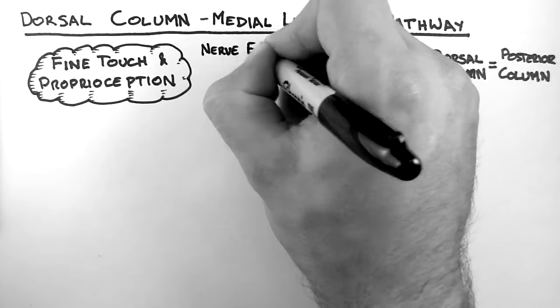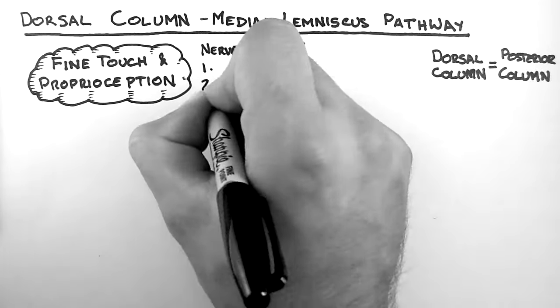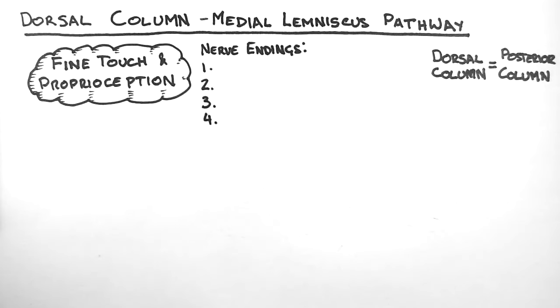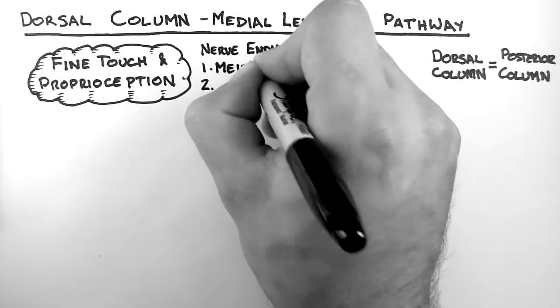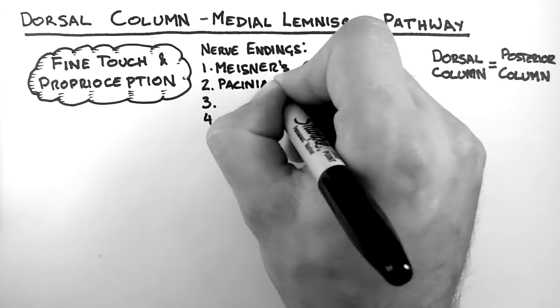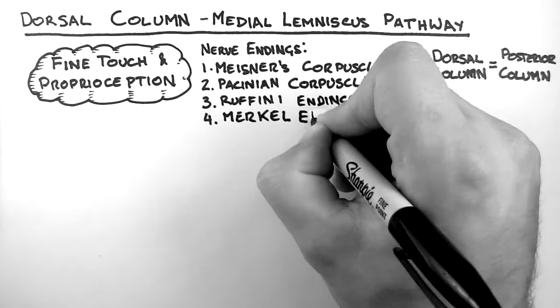Very quickly, there are four nerve endings which may sense fine touch and these begin the pathway. They are Meisner's corpuscles, Pacinian corpuscles, Ruffini endings, and Merkel endings.